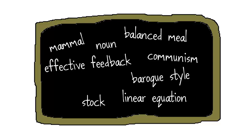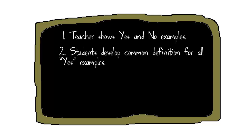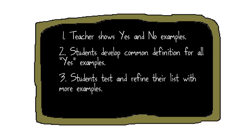In P.E., maybe it's the proper form of something like a golf swing. Here's how it works. First, the teacher shows a series of examples — we call these yes and no examples. The yes examples embody all of the qualities of the idea you are trying to show them, and the no examples might have some, but not all, of those qualities. As they watch these examples, students develop a common definition for all of the yes examples. Then the students test and refine their list by looking at more examples.